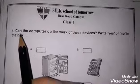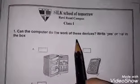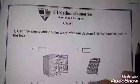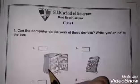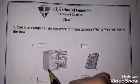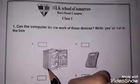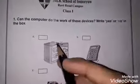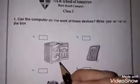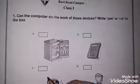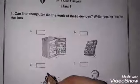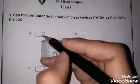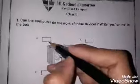First of all, see: can the computer do the work of these devices? Write yes or no in the box. We have devices and we have to tell whether the computer can do it or not. For example, this is a fridge. Can the computer work like a fridge? Write no.